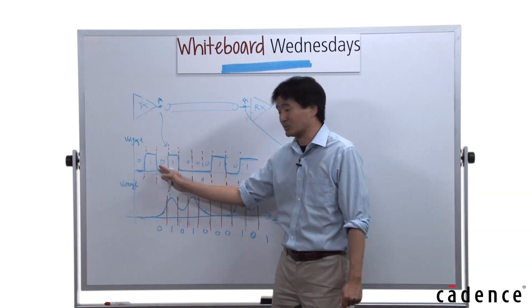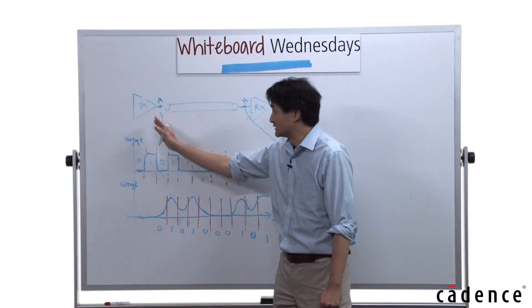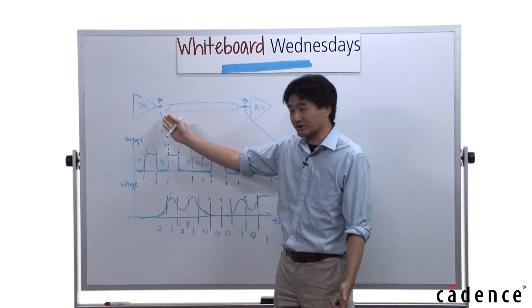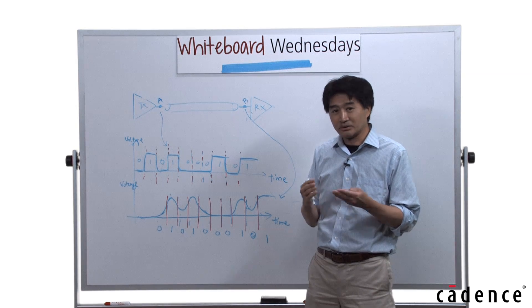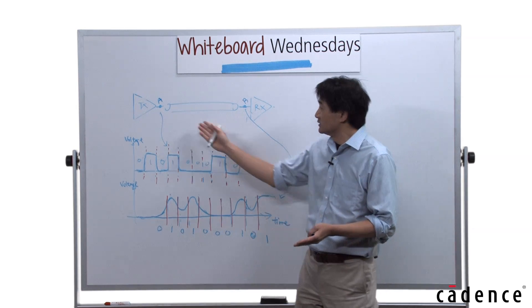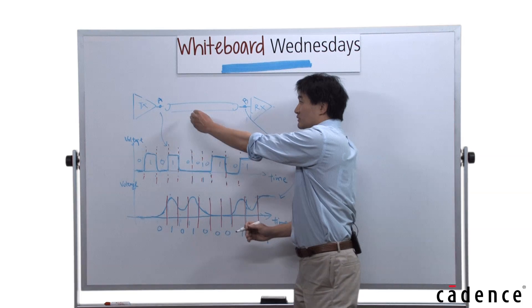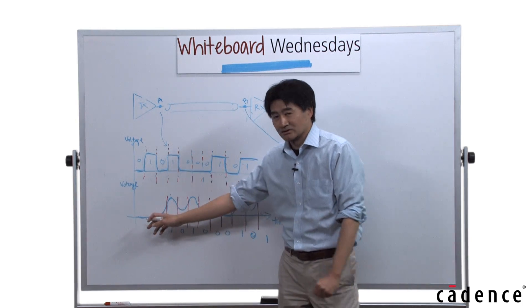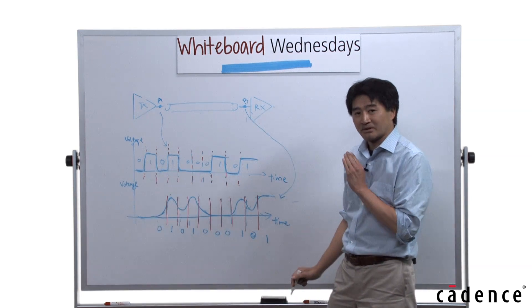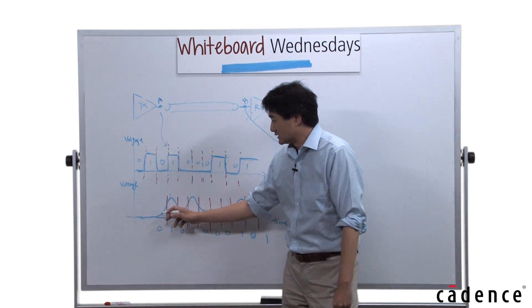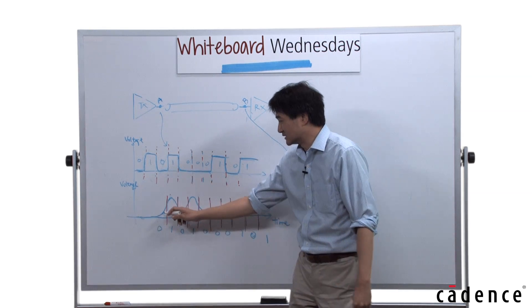At point A you get a bit string like 0, 1, 0, 1, 0 — and it's pretty clean because it's just at the beginning of the channel. After the channel — which represents a printed circuit board or package — there is some degradation. So at point B, when your signal travels through the channel to the receiver, what you see is the distorted signal. The signal no longer has a very sharp edge; it gets slowed down and doesn't go all the way to the top or bottom because it's busy toggling.